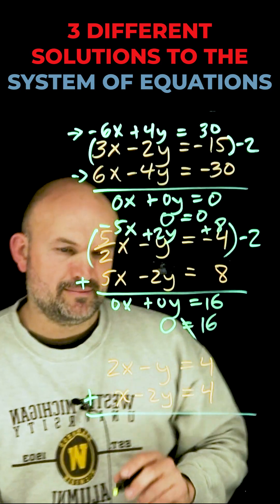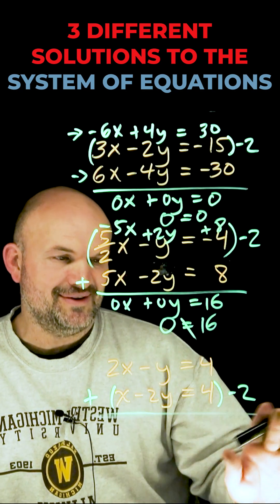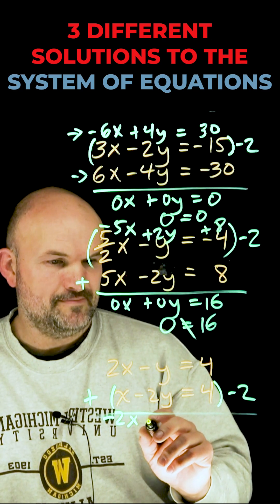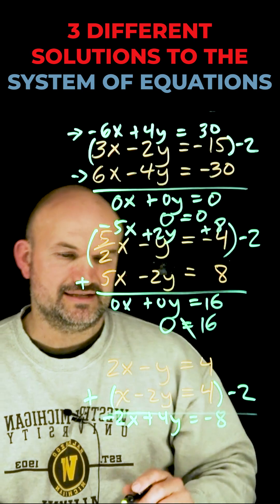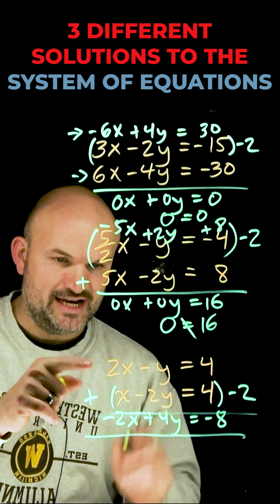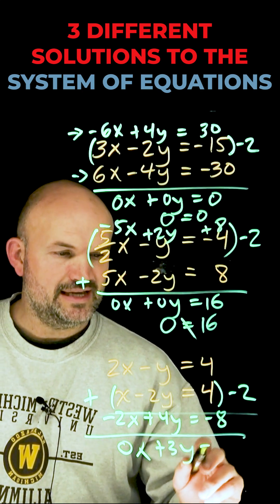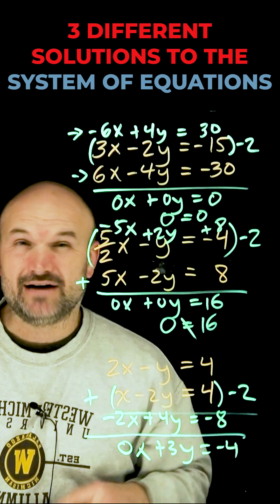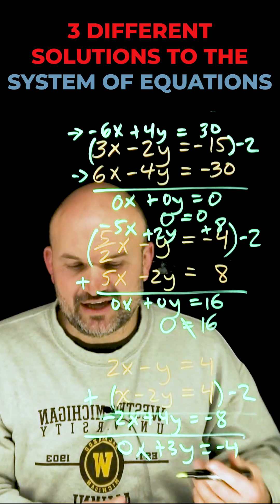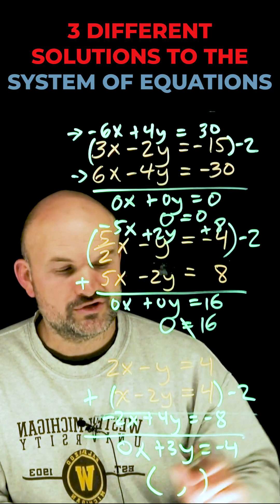For the last example, I'm going to multiply the bottom equation by negative 2. When I multiply, I get negative 2x plus 4y equals negative 8. Adding the top equation and the one I just changed gives me 0x plus 3y equals negative 4. I can now solve for y, then plug that value into one of the original equations to find x, giving me a coordinate point — so this one has one solution.